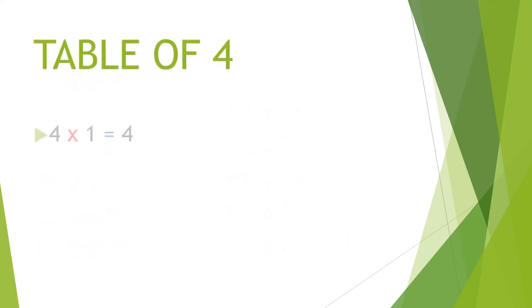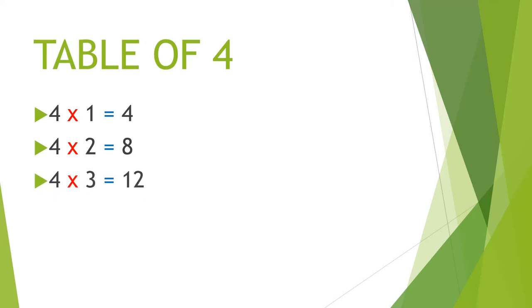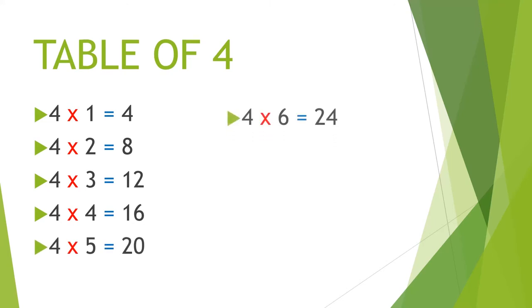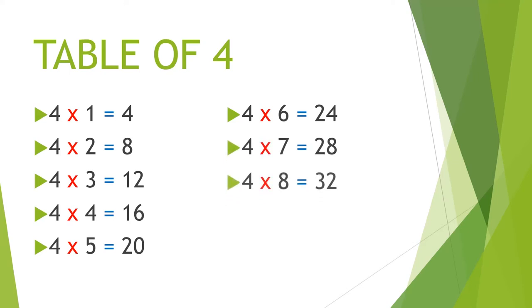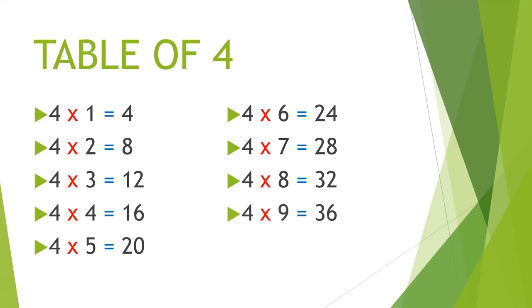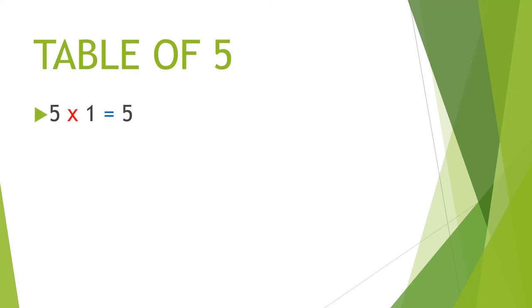Multiplication table of 4. 4 1's are 4, 4 2's are 8, 4 3's are 12, 4 4's are 16, 4 5's are 20, 4 6's are 24, 4 7's are 28, 4 8's are 32, 4 9's are 36, 4 10's are 40.